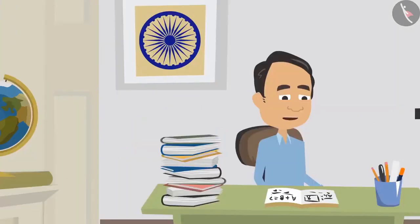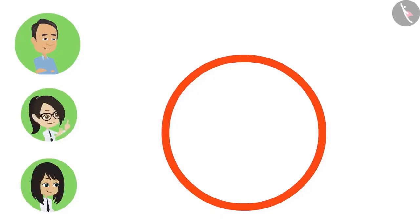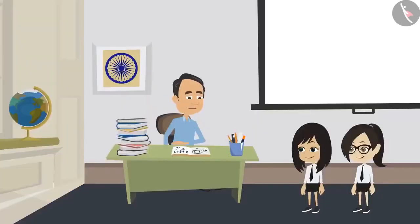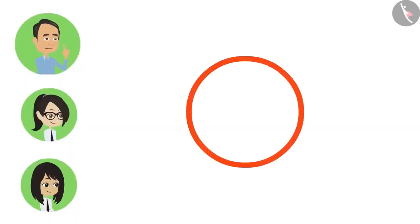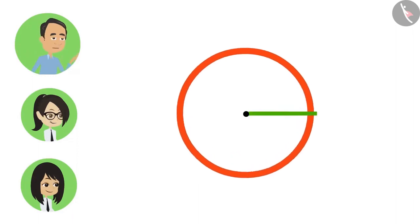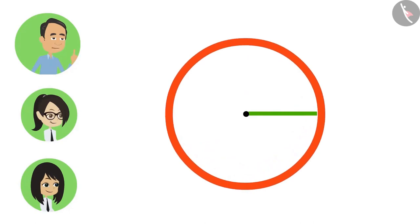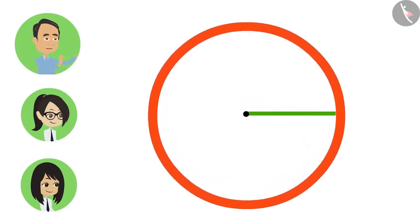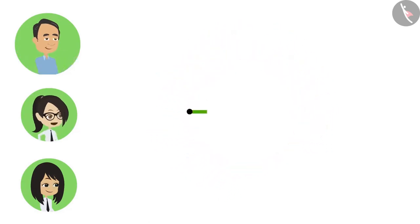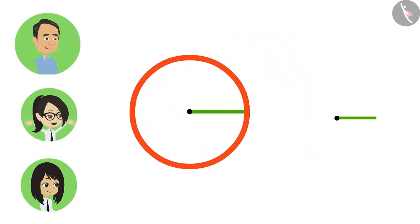We can definitely say. The radius is the distance from the centre to the boundary. If we increase the radius, the distance from centre to boundary increases. This is a circle — now we will increase this radius, and look, we get a bigger circle. If we increase the radius further, we get an even bigger circle. If we decrease the radius, we get a smaller circle. Larger the radius, larger the circle; smaller the radius, smaller the circle.